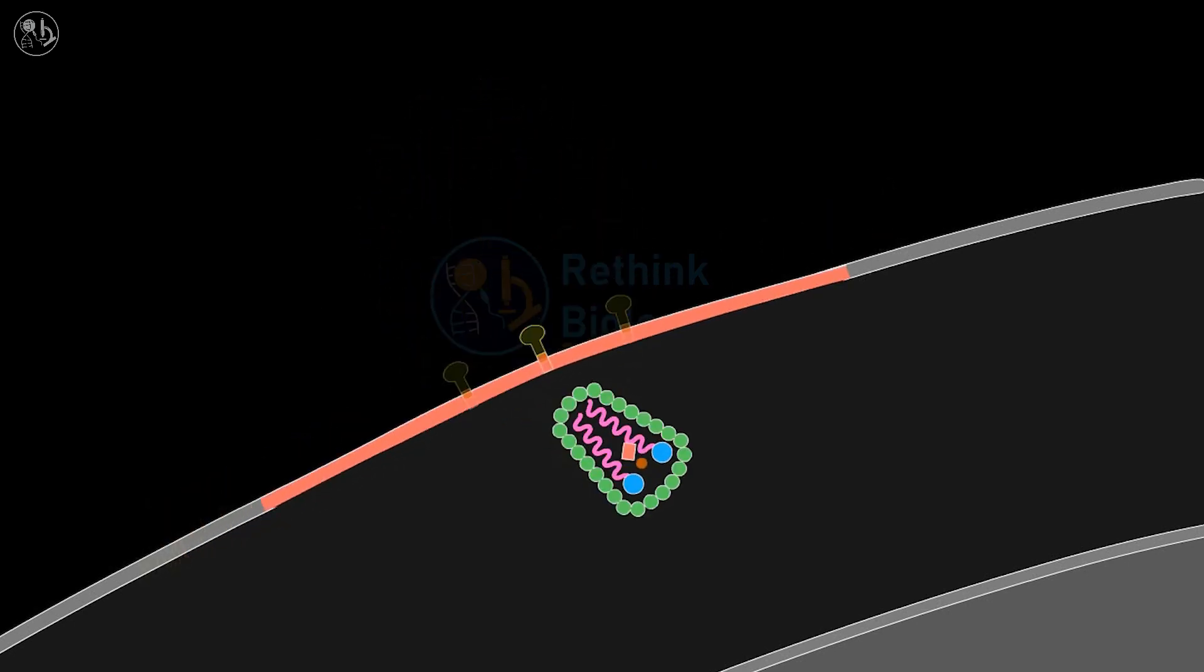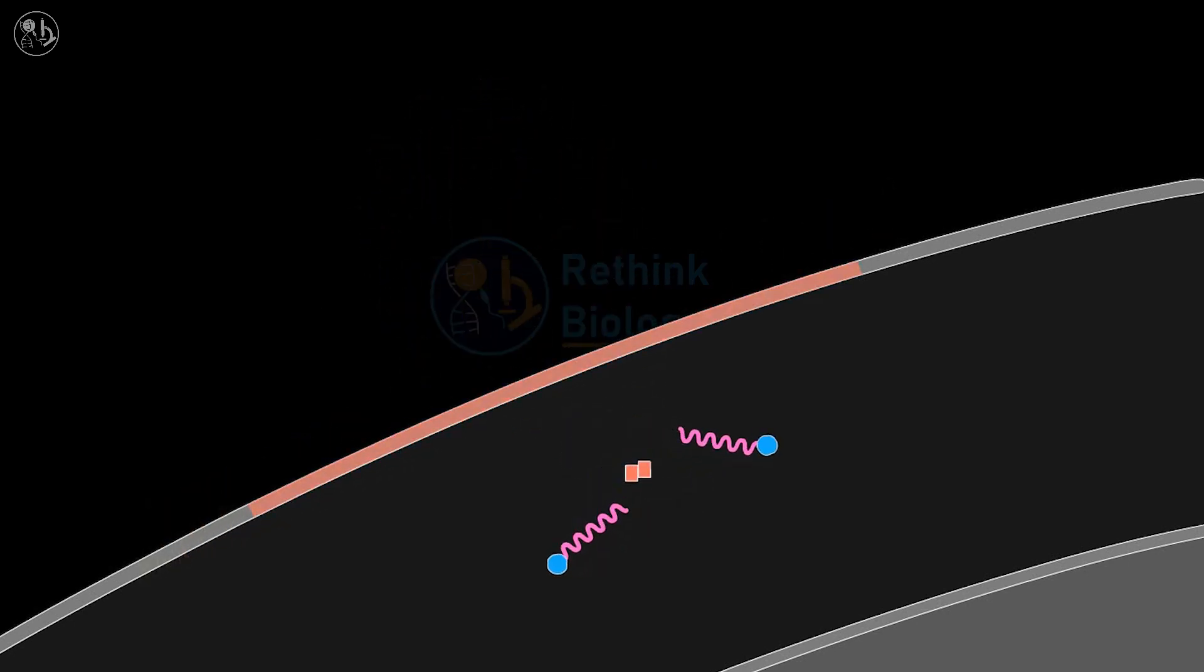The uncoating allows entry of the nucleocapsid, which contains the viral genome, into the cell. The viral reverse transcriptase, a component of the viral particle, then acts.